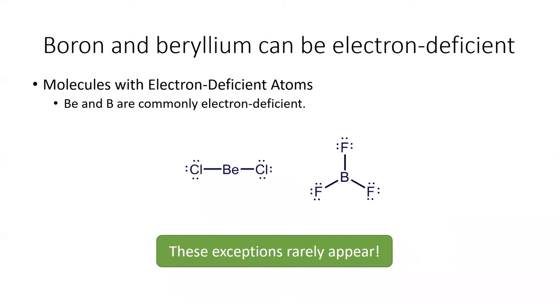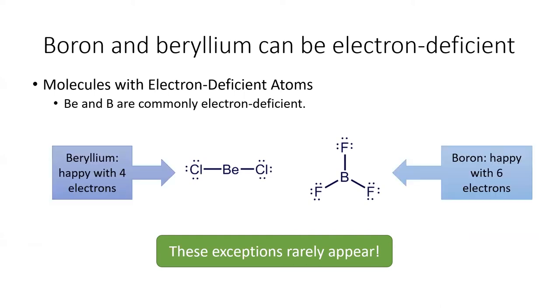The elements beryllium and boron, though they're not very common, can have less than a full octet. Specifically, beryllium can have 4 valence electrons around it, and boron can have 6 valence electrons around it. Now, these exceptions are rare, but boron shows up more frequently than beryllium does.